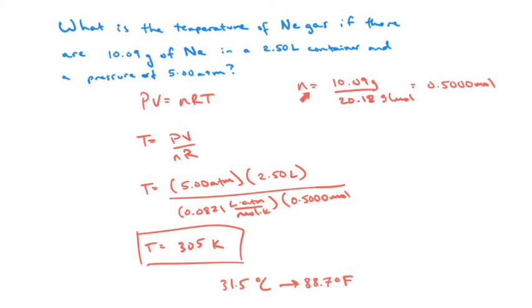So here's our solution. We first need to turn the grams of neon into moles, so divided by the molar mass, 20.18 grams per mole. And then we solve this equation for T, PV over NR. Plug in the values, 5 atmospheres, 2.5 liters on the top, 0.0821 is R, and 0.500 moles is therefore moles. And then solve for T, that comes out to 305 Kelvin. Just in case you are curious, converting those to numbers you might be more familiar with, 31.5 degrees Celsius, which is 88.7 degrees Fahrenheit. So a pretty reasonable temperature here for about half a mole of neon.